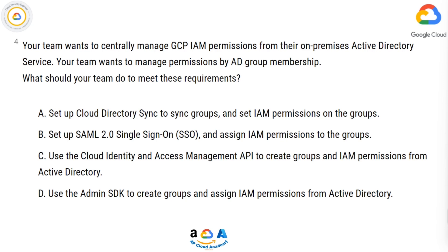A. Set up Cloud Directory Sync to sync groups and set IAM permissions on the groups. B. Set up SAML 2.0 single sign-on (SSO) and assign IAM permissions to the groups. C. Use the Cloud Identity and Access Management API to create groups and IAM permissions from Active Directory. D. Use the Admin SDK to create groups and assign IAM permissions from Active Directory.